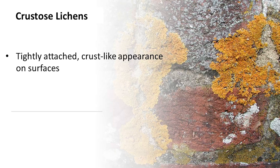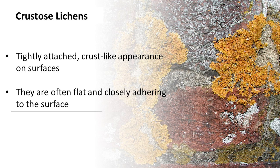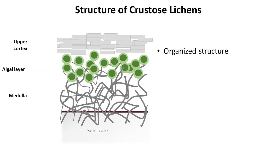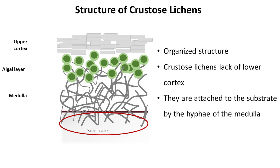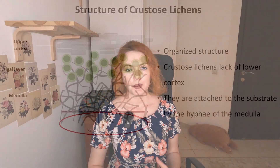Crustose lichens are a type of lichen characterized by their tightly attached crust-like appearance on surfaces such as rocks, bark, and soil. They are often flat and closely adhering to the surface. Crustose lichens lack a lower cortex and are attached to the substrate by the hyphae of the medulla, making contact so intimate that they are practically inseparable from the substrate.